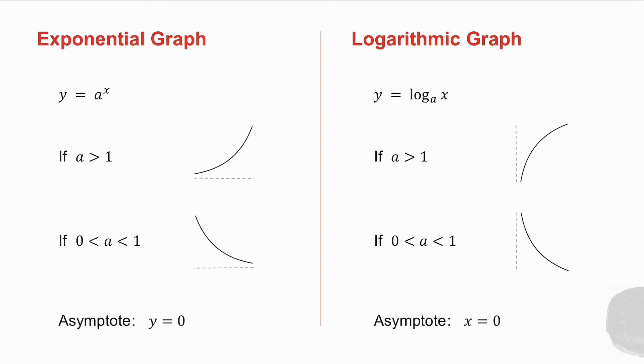If I take my exponential graph, remember what we had is the following. If a is greater than 1, my graph slopes like that. And if a lies between 0 and 1, my graph slopes like that. My asymptote is y equals 0.